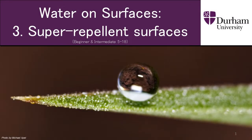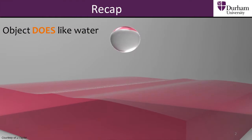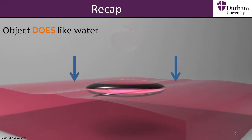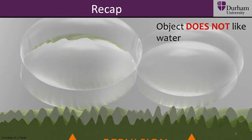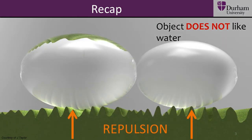In section 2, we learned about how water behaves when we release droplets onto different surfaces. We now know that some objects let water spread, while others don't, and water can't spread out on these surfaces.